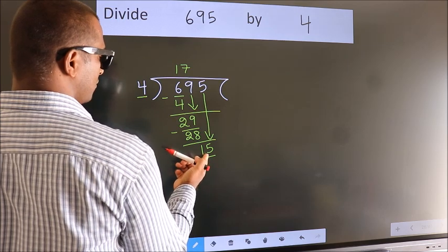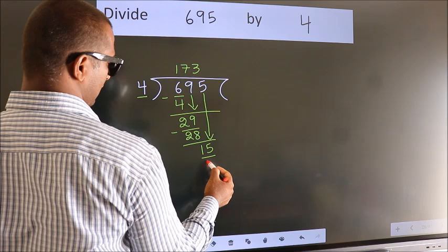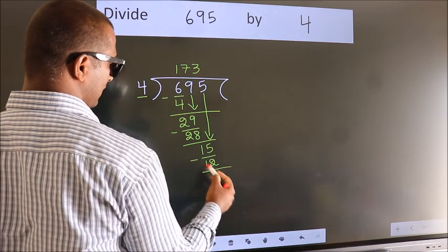A number close to 15 in the 4 table is 4 times 3, which is 12. Now we subtract and get 3.